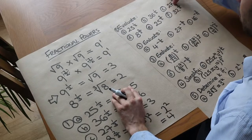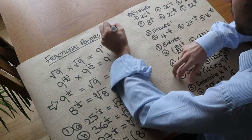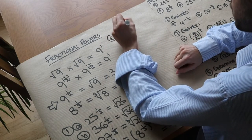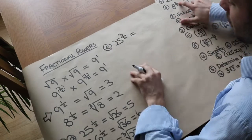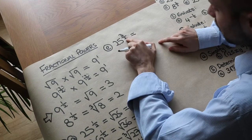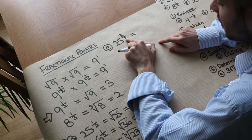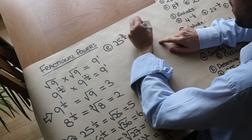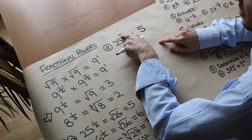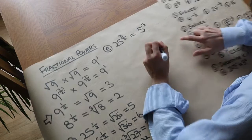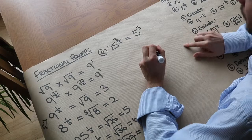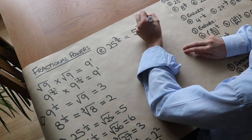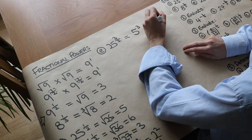For 25 to the power of 3 over 2: there's a 2 in the denominator, so we first do the square root of 25, which is 5. We still have that power of 3 in the numerator, so we compute 5 cubed — 5 times 5 times 5 — which is 125.